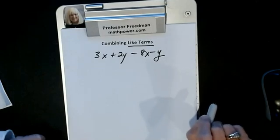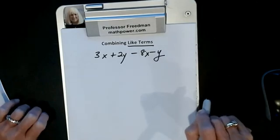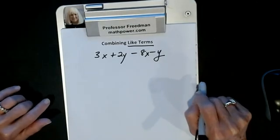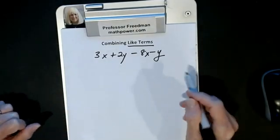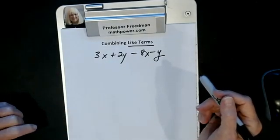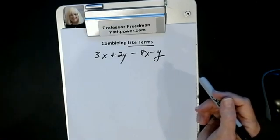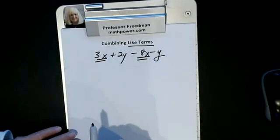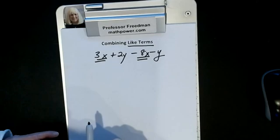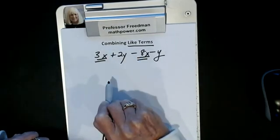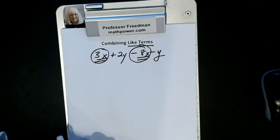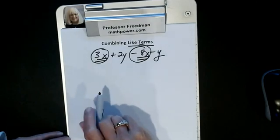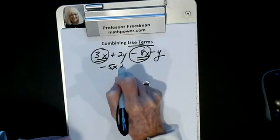I want to combine like terms. First of all, this is not an equation — there's no equal sign in sight. If I don't have an equation, I basically have to do four things: add, subtract, multiply, and divide. You don't see a dot or parenthesis, so it's not multiplication; you don't see a division sign, so it's got to be addition or subtraction. This is an x term and this is an x term. I have plus 3x and minus 8x — the sign is included in the term. Signs are different, so subtract and take the sign of the larger: I get minus 5x.